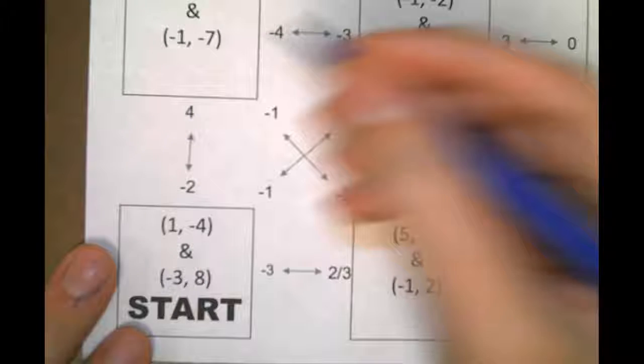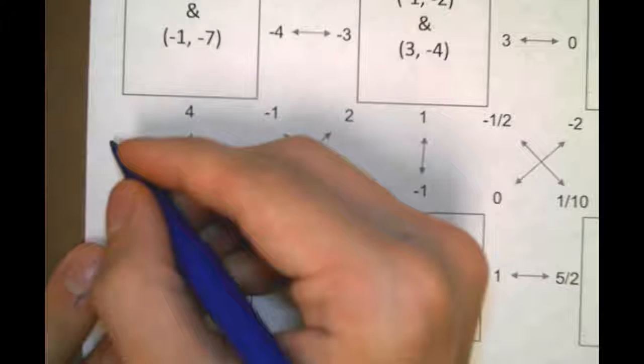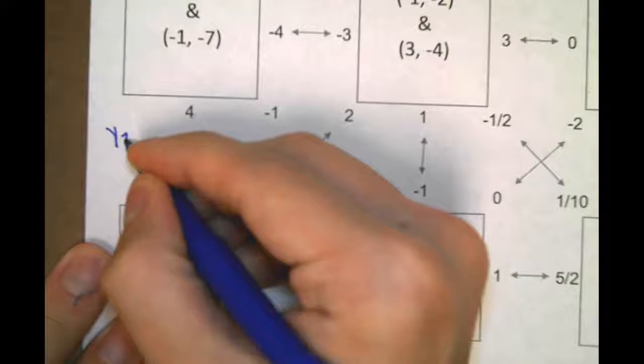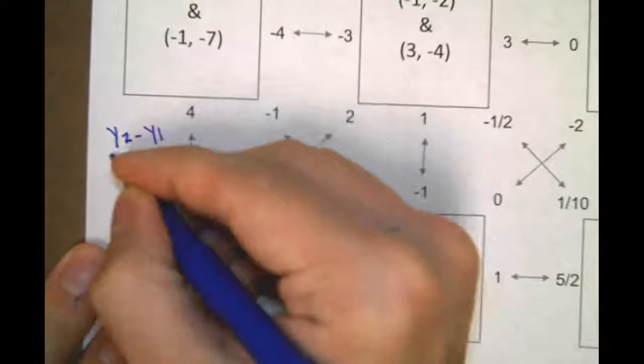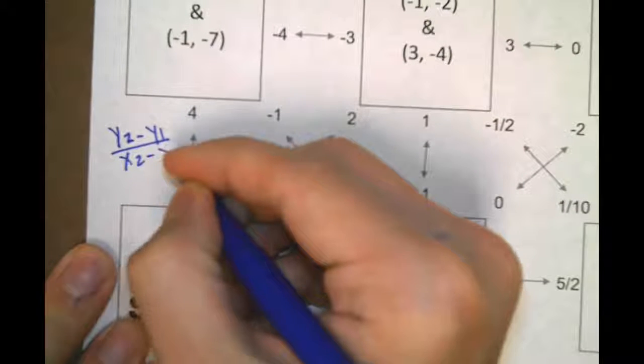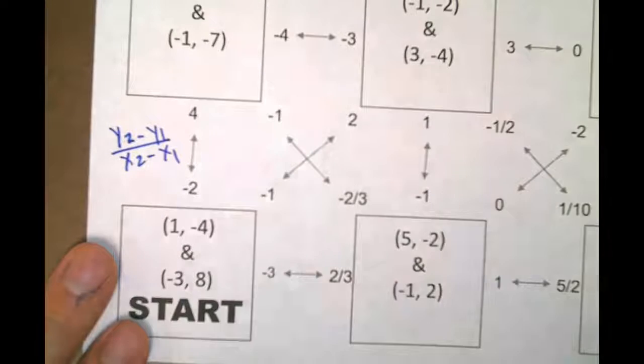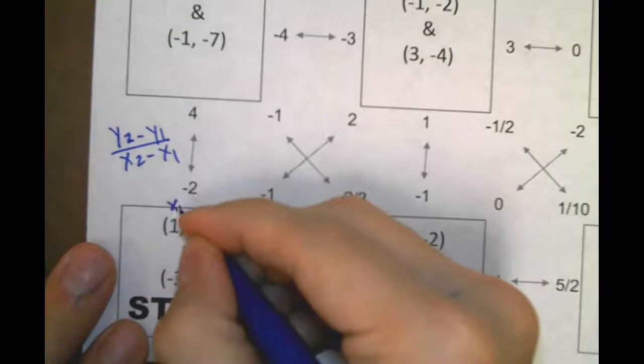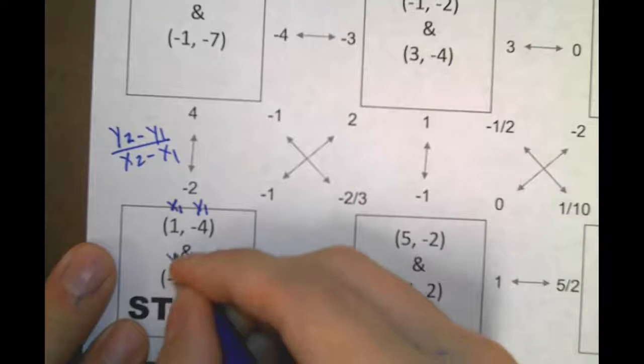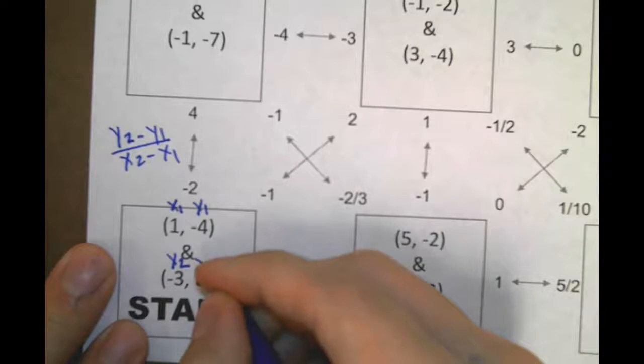This is a slope formula worksheet. The slope formula is y2 minus y1 divided by x2 minus x1. That's the first step. Write it down. Second step, label them: x1, y1, x2, y2.